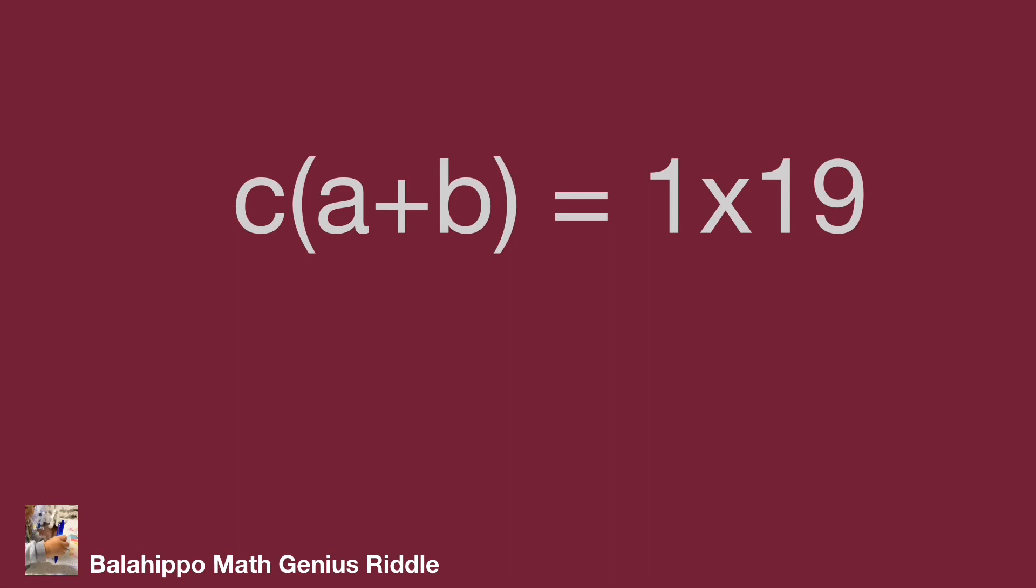The given information shows a, b, c are positive integers. Then a + b should be larger than c. So c = 1 and a + b = 19.